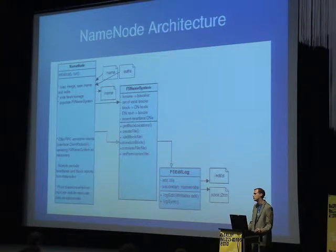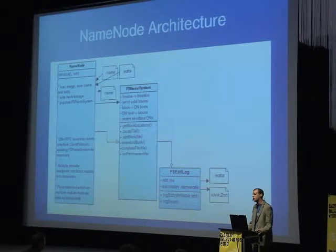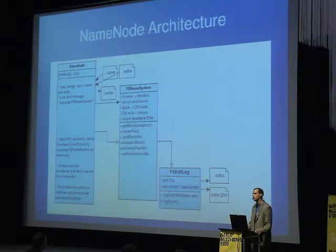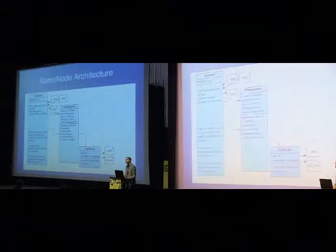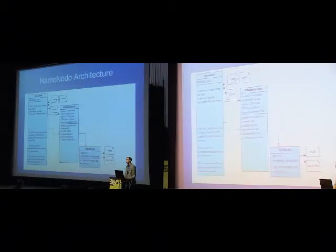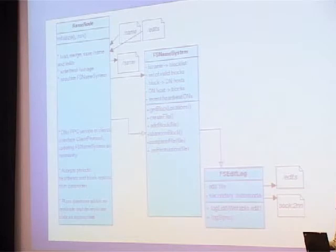If someone takes down your name node, you can retrieve the FS image from the secondary name node, manually reconfigure that node or another to be the new name node, and start it up with that image. When it starts up it should have all the correct data, the data nodes will connect to it, and your file system will be functioning.